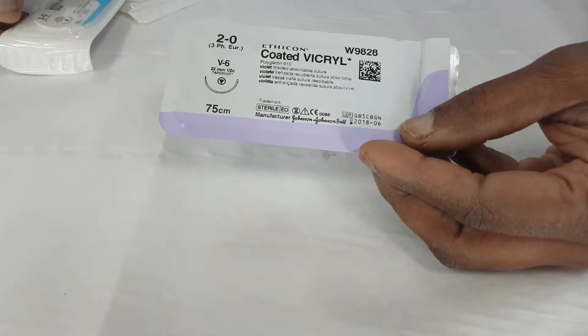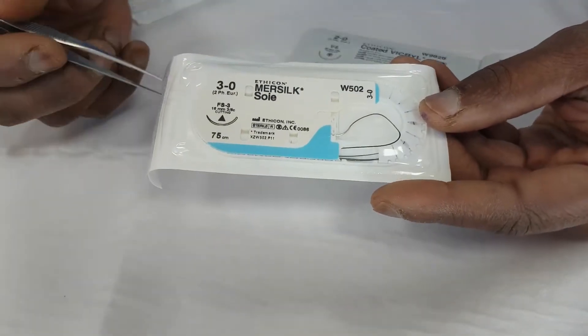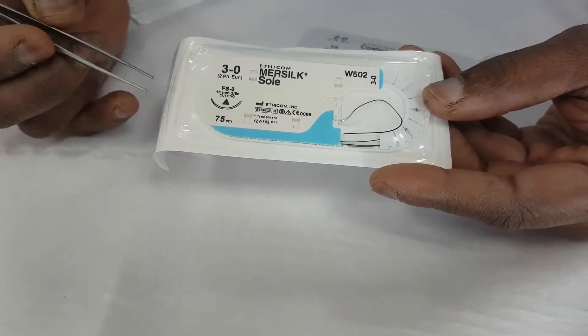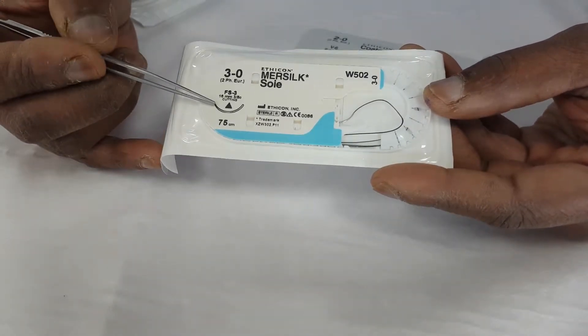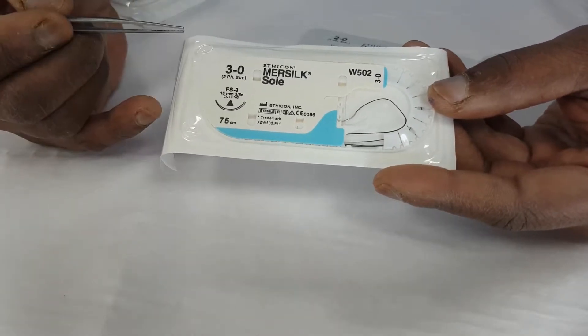If you compare this one, for example, which is Vicryl, to this stitch which is silk, a stitch we sometimes use for sewing in drains and things like that, you can see the needle is still a semicircle, but the cross-section of the needle is a triangle.